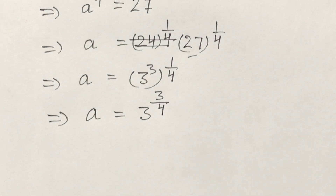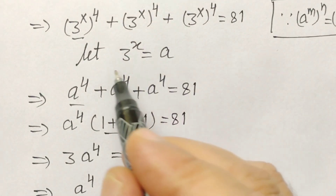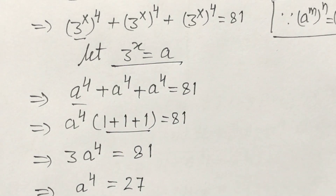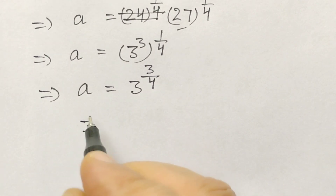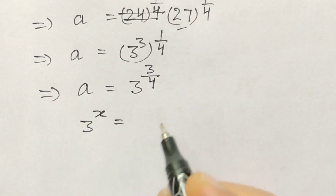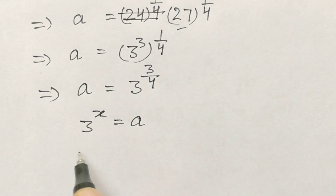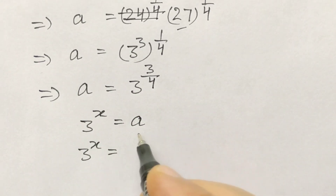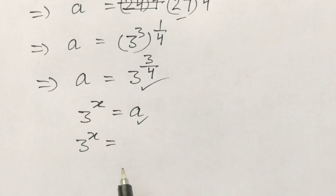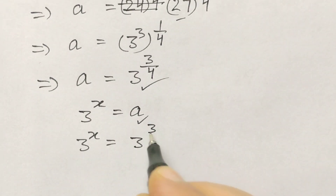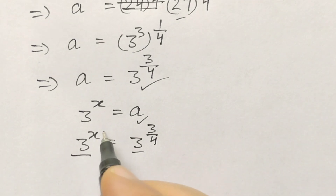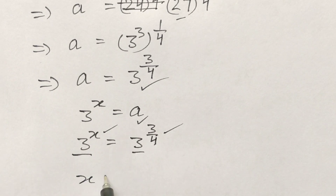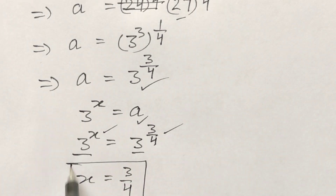As we have assumed 3 to the power x equals a, so 3 to the power x equals 3 to the power 3 by 4. Since we have the same base on both sides, x is equal to 3 by 4.